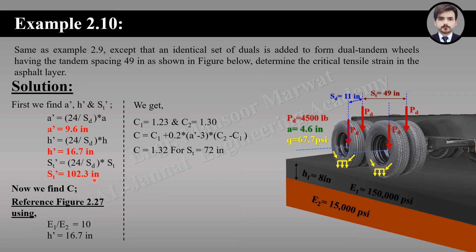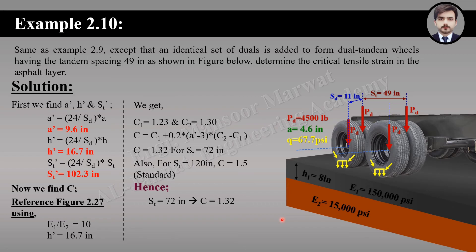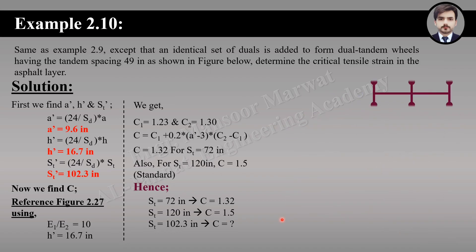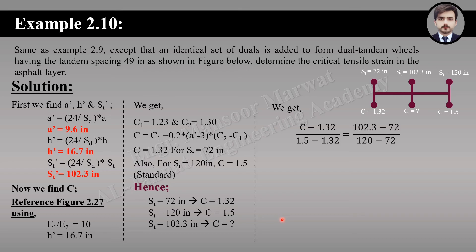The modified tandem spacing of 102.3 inches exceeds 72 but is less than 120 inches. The standard value for S_T equals 120 inches is C equals 1.5. So for S_T equals 72 inches, C equals 1.32, and for S_T equals 120 inches, C equals 1.5. Interpolating for S_T equals 102.3 inches, C equals 1.43.